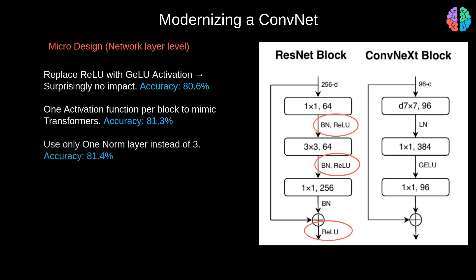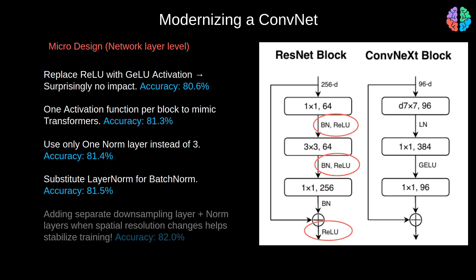They also cut down the normalization layers and introduce layer normalization instead of batch normalization, taking accuracy up to 81.4. By now they have already overtaken Swin Transformer's result. Replacing batch norm with layer norm throughout hits 81.5. Finally, similar to Swin Transformer, they introduce separate downsampling conv layers with kernel size 2×2 along with normalization, further boosting accuracy to 82%. So with these changes, they arrive at the final ConvNeXt architecture.